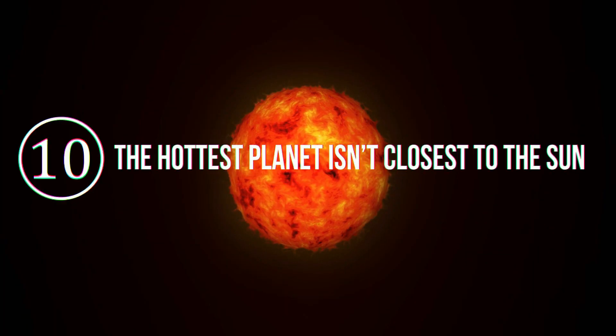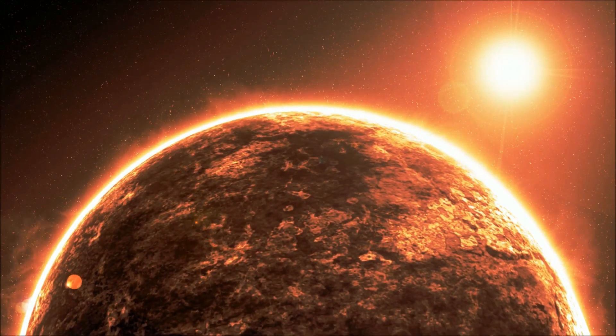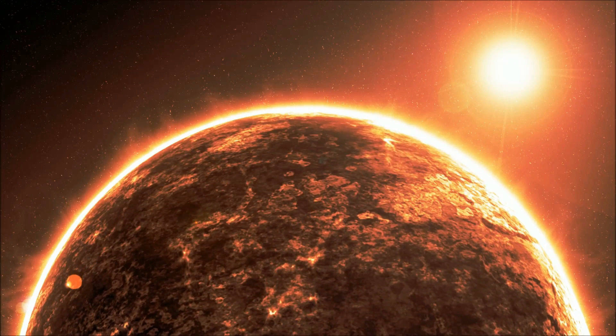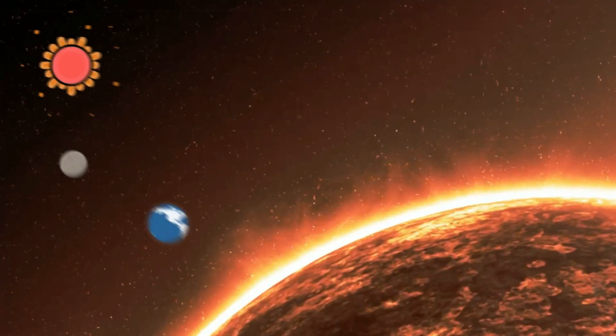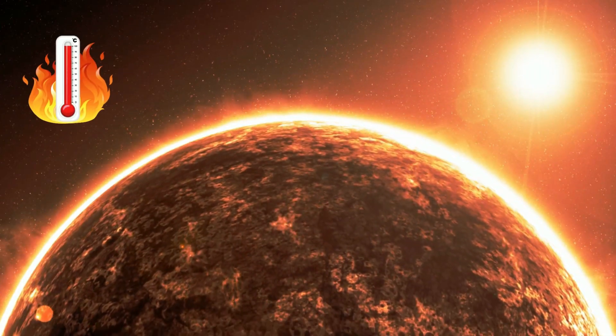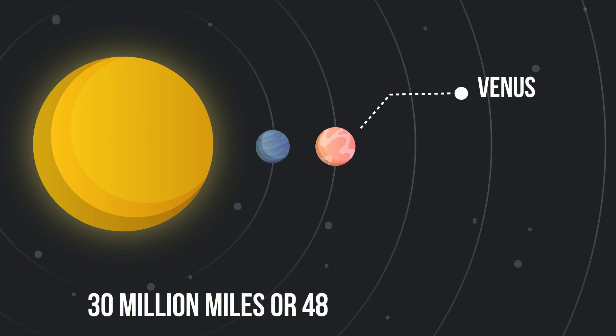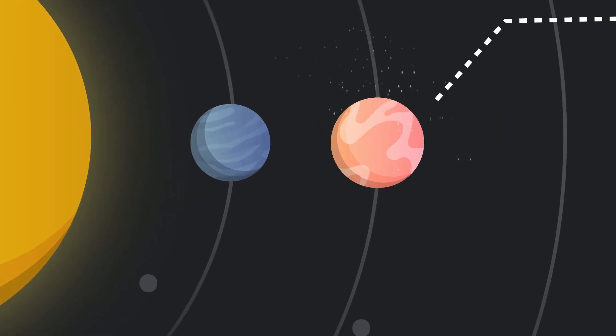Number 10. The hottest planet isn't closest to the sun. Almost everyone knows that the planet we call Mercury is the closest planet to the sun. It is less than half the distance away from the sun as compared to Earth. So it should be the hottest planet, right? And Venus is the second planet away from the sun. It is in fact 30 million miles or 48 million kilometers farther from the sun than Mercury. So it should be cooler than Mercury. Both assumptions are wrong.